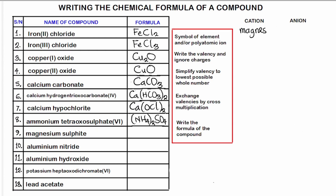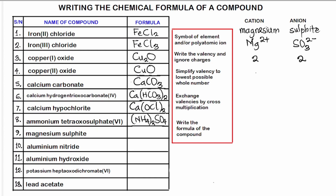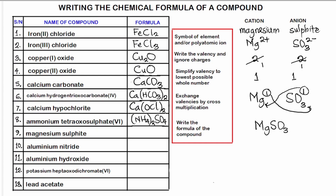Number nine: magnesium sulfite. Magnesium is Mg²⁺ and sulfite is SO₃²⁻. Note that sulfate is SO₄²⁻ while sulfite is SO₃²⁻ — one oxygen atom fewer. The valency of magnesium is 2 and sulfite is 2. We simplify 2:2 to 1:1. Cross-multiplying and exchanging gives MgSO₃ — the chemical formula for magnesium sulfite.